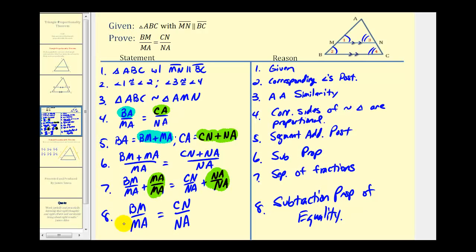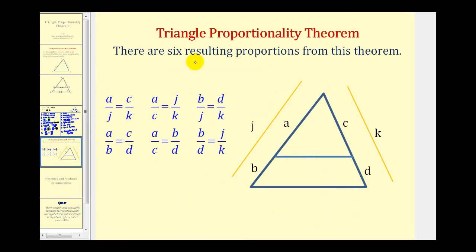And there it is. One more thing to mention about the Triangle Proportionality Theorem: there are actually six resulting proportions from this theorem. It doesn't just have to involve the two shorter segments divided by the parallel line — we can also include the lengths of the full sides from the largest triangle. Pause the video and take a look at all of these.